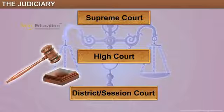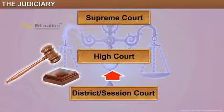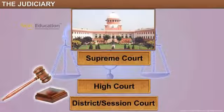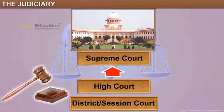This means that if a person feels they have not been given justice in a lower court, like the Sessions or District Court, they can approach the High Court to re-look at the case. If justice is still not met, the case is taken to the Supreme Court, where the final judgment is made.